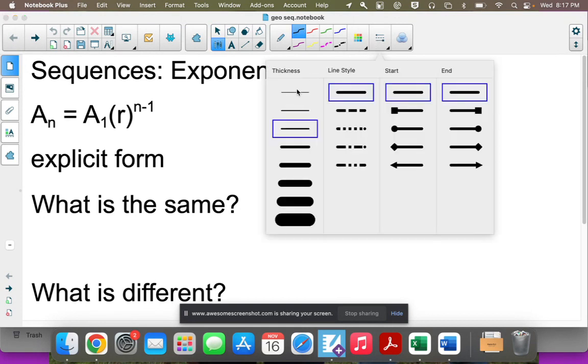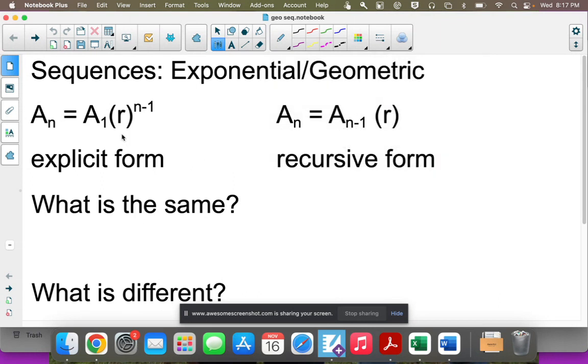We're going to go through and make sure we know the differences and how to apply them. This is the explicit form, which has n-1 as the exponent, and this is the recursive form. Recursive means that whatever term you want is dependent on the term that came before. If I want the fifth term, I have to go to the fourth term and multiply by whatever my r is.